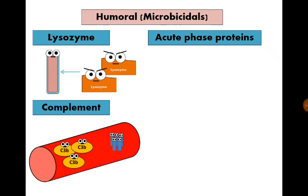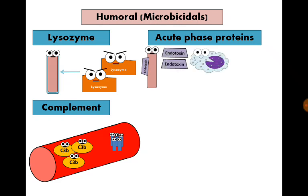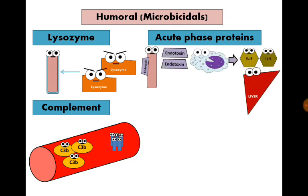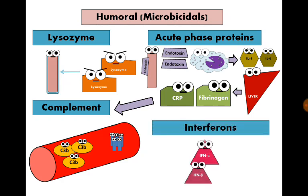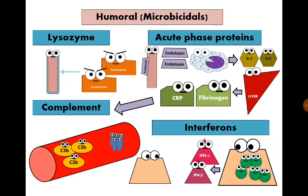Third are the acute phase proteins, synthesized in the liver in response to interleukin-1 and interleukin-6 produced by macrophages. Macrophages produce these interleukins when they detect bacterial endotoxin. Acute phase proteins include C-reactive protein and fibrinogen. They cause non-specific inflammatory reactions in response to any infection, like fever, complement activation, and opsonization.